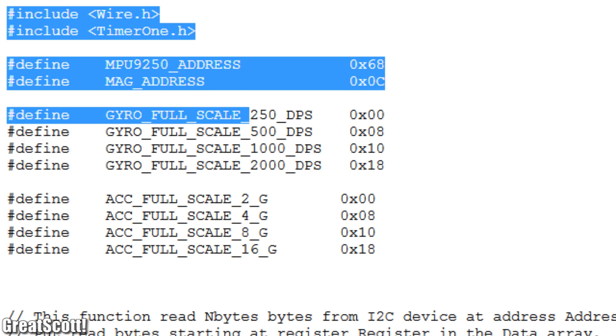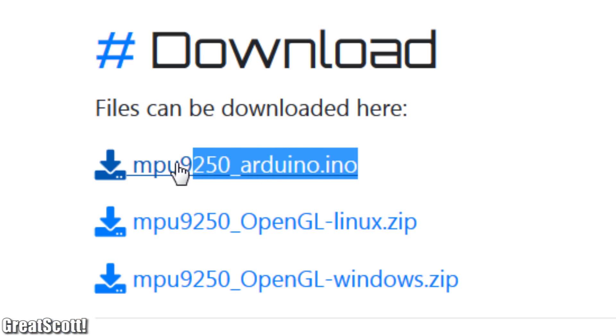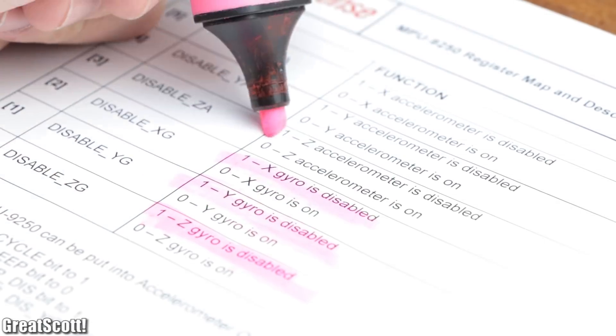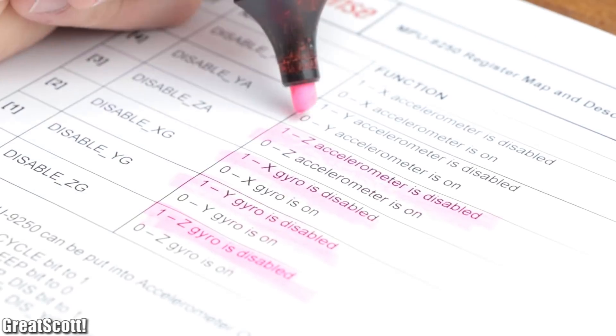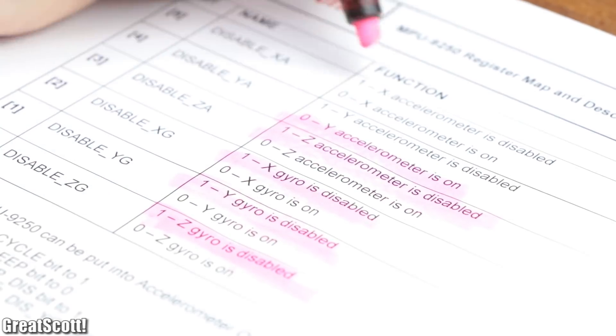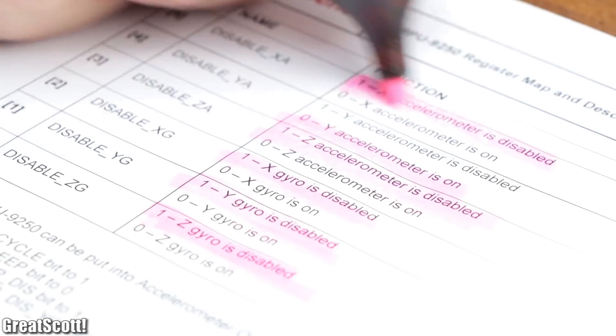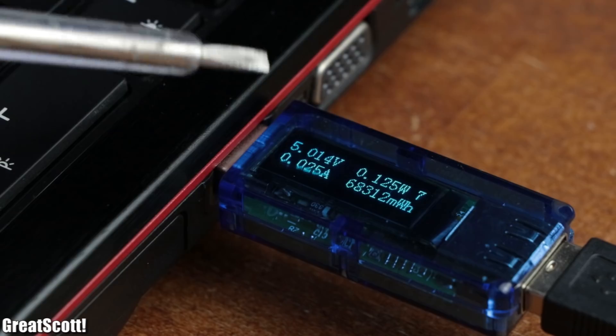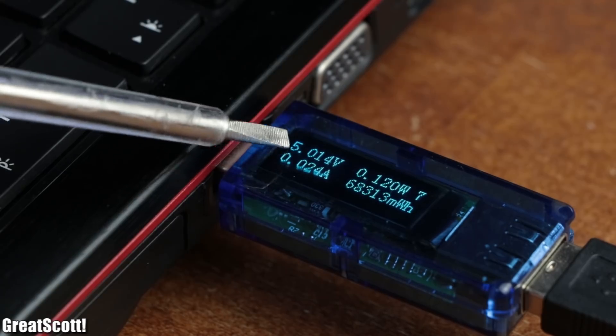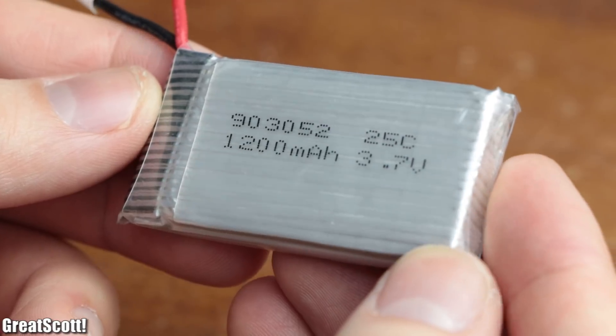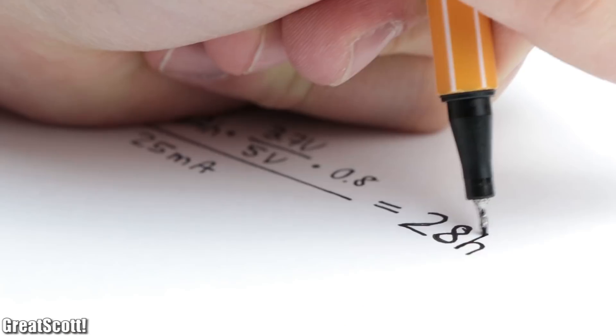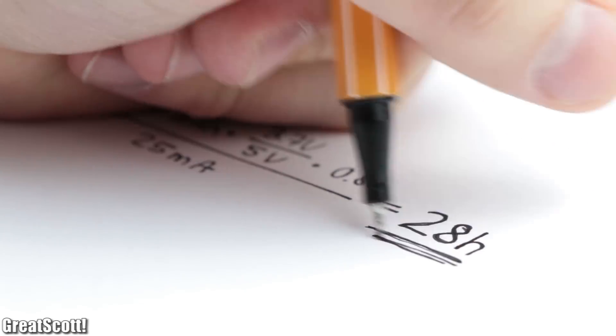To communicate with it, I partly used code from Lulu's blog, and additionally added a line of code in order to deactivate the other accelerometer axis and gyroscope axis in order to save a bit of power. This resulted in a total current demand of roughly 25 milliamps at 5 volts, which with a LiPo battery capacity of 1200 milliamp hours should give me a runtime of around 28 hours.